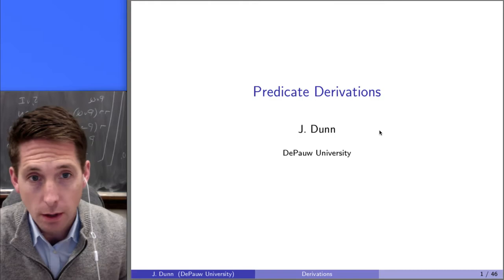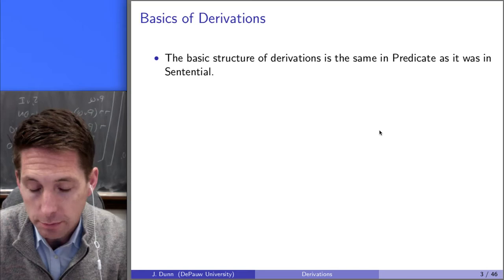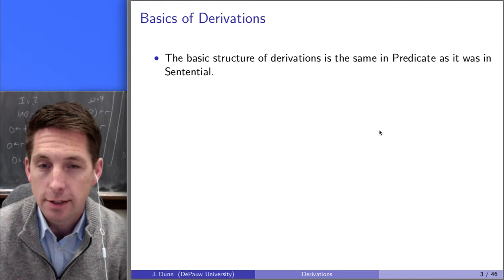So what are predicate derivations? We're going to go through section one here. Predicate derivations are ways of proving arguments in predicate logic to be valid.